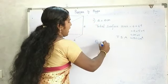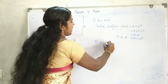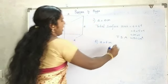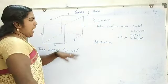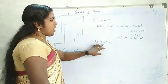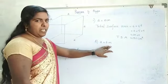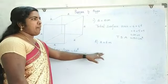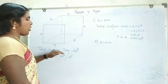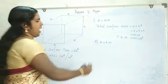Let us solve another example. Suppose side a is equal to 6 centimetres. Then find out the total surface area.